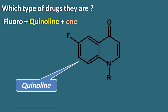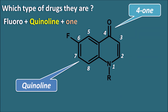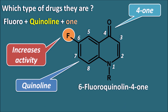We can start the numbering of this quinoline ring system from the nitrogen: positions one, two, three, four, five, six, seven, and eight. Fluoroquinolones have a ketone group at the fourth position, so we call it 4-one. They also have a fluorine group at the sixth position, which increases the activity of these quinolines. So these drugs can be written as 6-fluoroquinolones-4-ones, or simply fluoroquinolones.